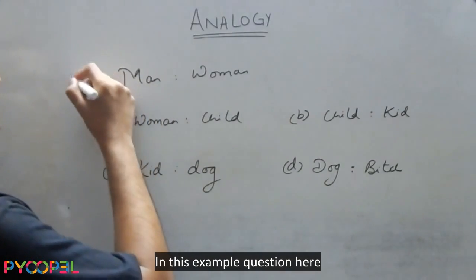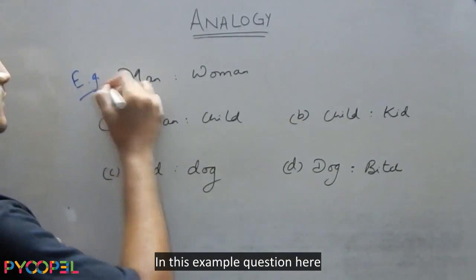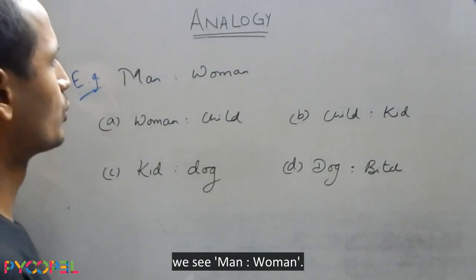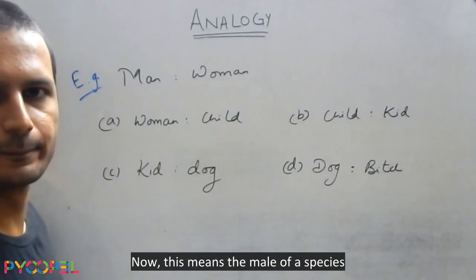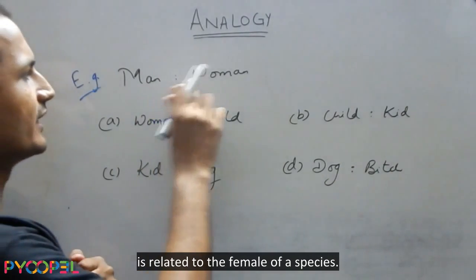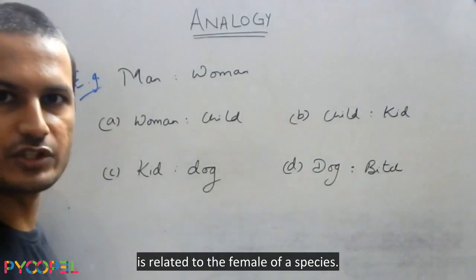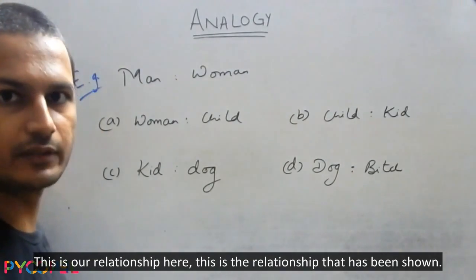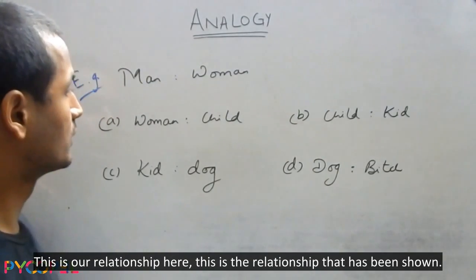In this example question here, we see man is to woman. Now, this means the male of the species is related to the female of the species. This is our relationship here, this is the relationship that has been shown.